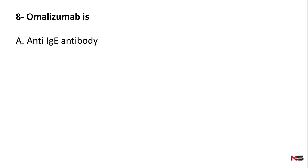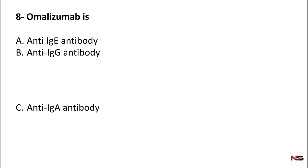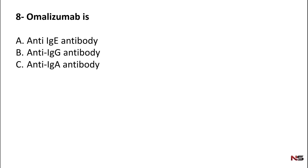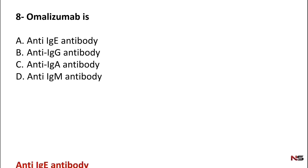Question 8: Omalizumab is — anti-IgE antibody, anti-IgG antibody, anti-IgA antibody, or anti-IgM antibody. Omalizumab is used for the treatment of asthma and it is an anti-IgE antibody. Option A is the correct answer.